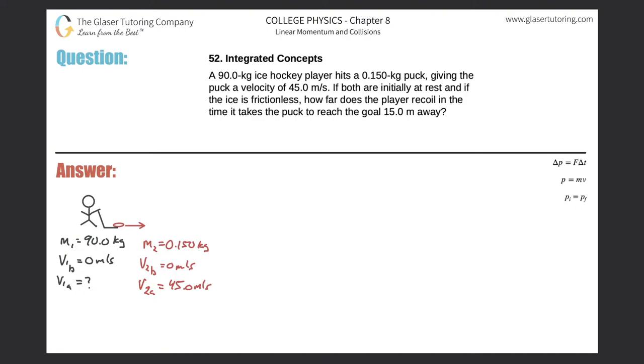Number 52, integrated concepts. A 90 kilogram ice hockey player hits a 0.15 kilogram puck, giving the puck a velocity of 45 meters per second. If both are initially at rest and if the ice is frictionless, how far does the player recoil in the time it takes the puck to reach the goal 15 meters away?